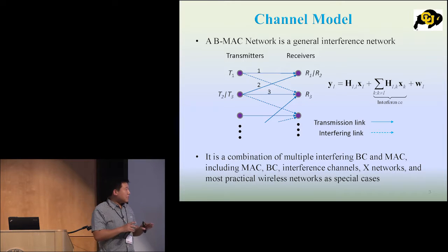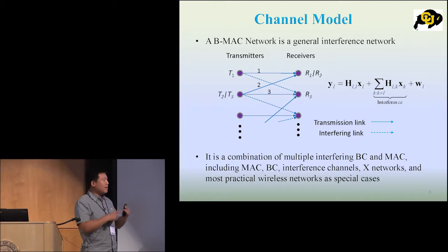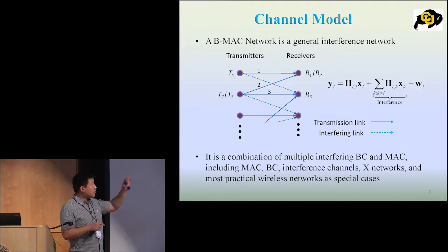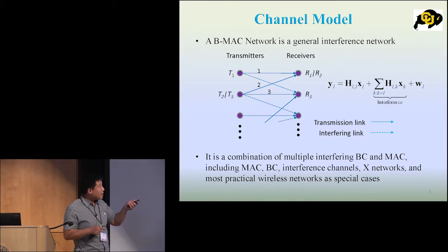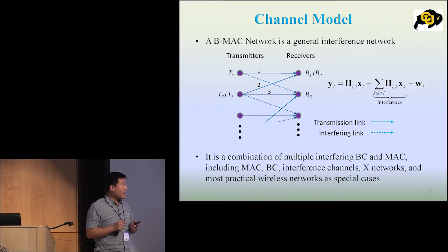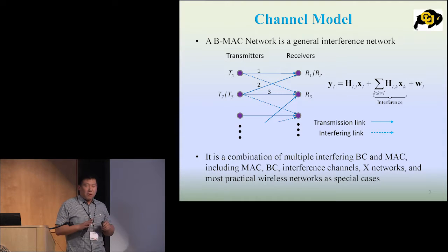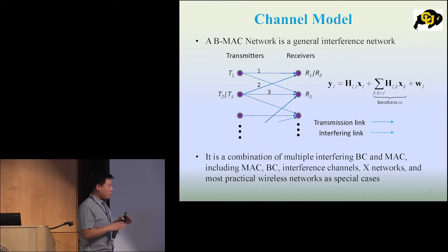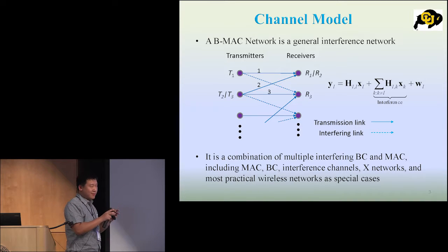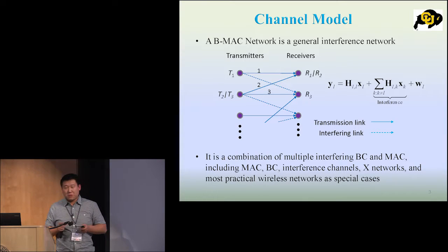We work on this model, which can generalize the broadcast and the MAC channel, and we also consider the interference here. For example, the first transmitter to the second receiver, that's the interference. At the receiver side, we can model the received signal as the transmission signal plus the interference plus the noise. We are trying to calculate the maximum achievable rate of this network.